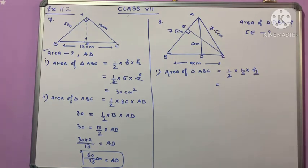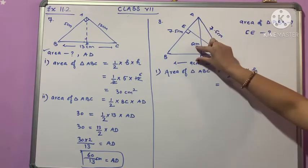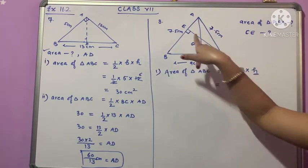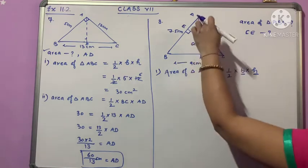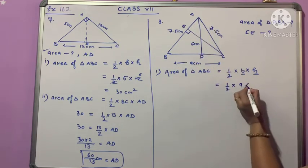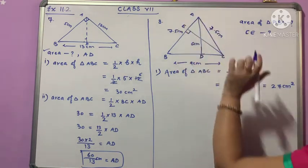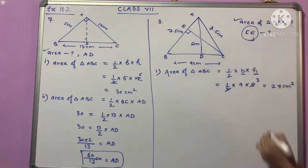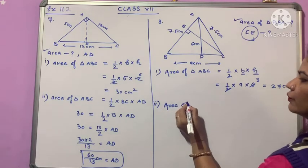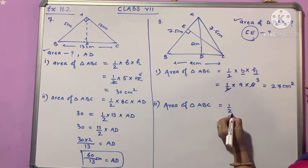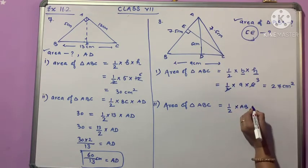We use half into base into height. If I need the area, I should know the base and height too. If the base is BC, we have AD as height given. So we choose this set. We will use base BC which is 9 and height is 6. This set will work because both values are given.